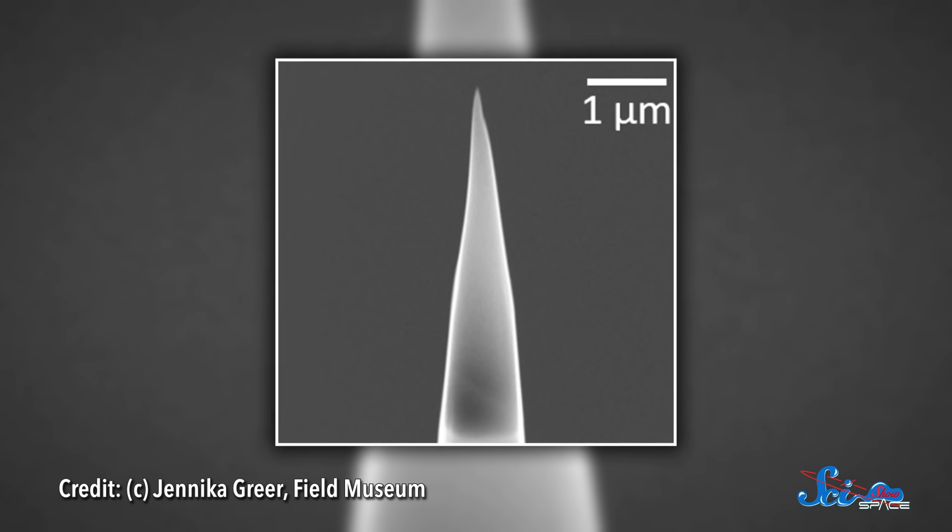But unlike regular mass specs, this technique can build a 3D map of a sample. That's a big deal, because while APT does destroy a tiny bit of your original sample, you end up with a digital recreation that can be used in future studies. Here's how it works.